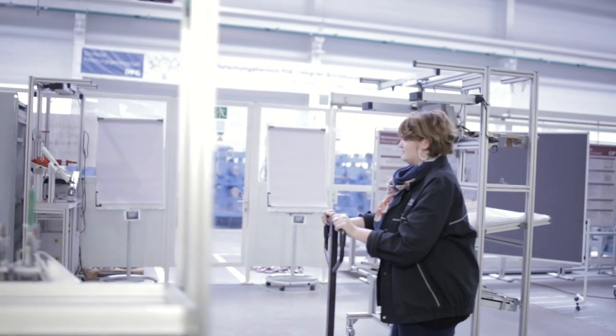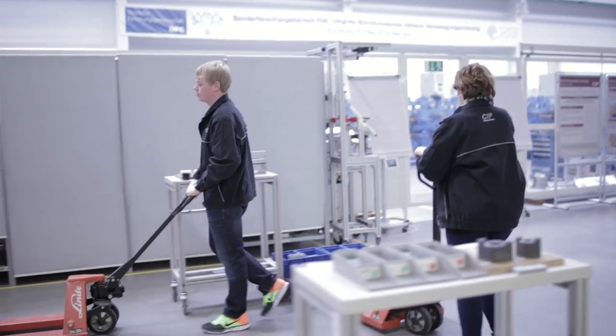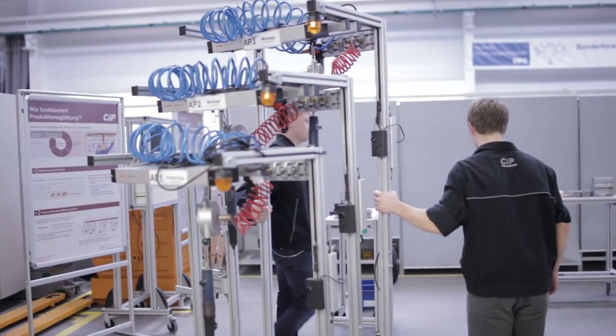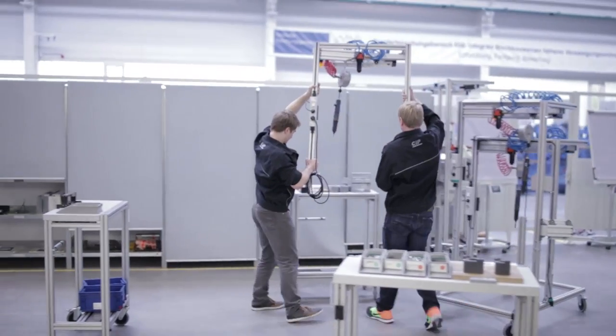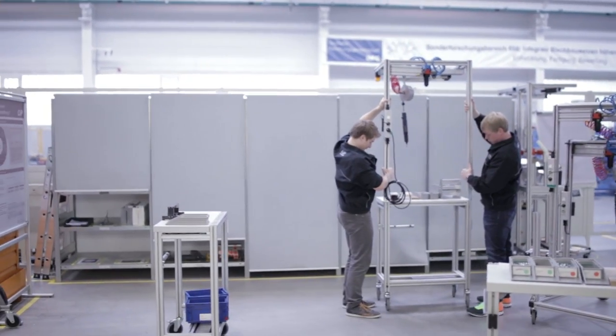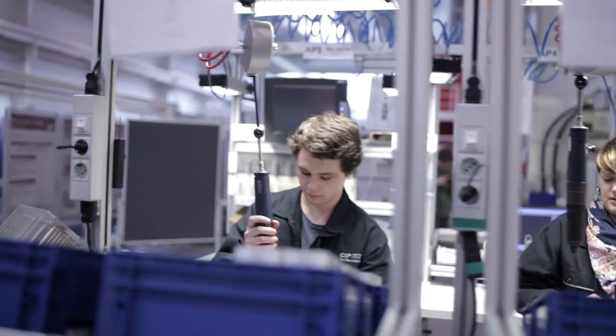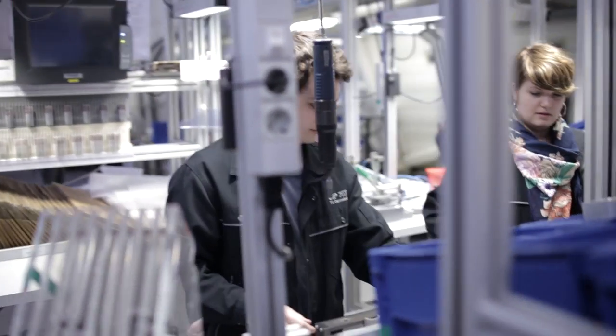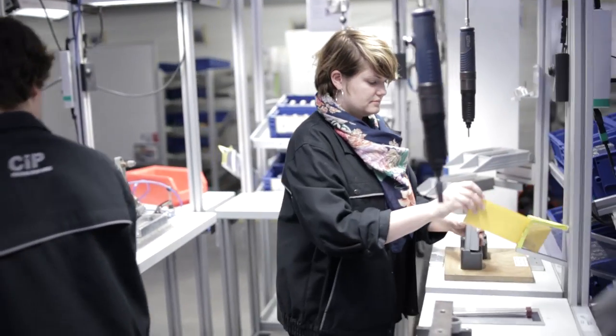If the simulated assembly layout and the intended tacting have proven to be suitable, they are realized physically in the learning factory. Workstations are consolidated in an assembly line. Necessary tools and fixtures are installed. The U-shaped line is particularly favorable as it allows the only two workers to operate the entire assembly system without having to bridge large distances between the individual workstations.